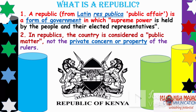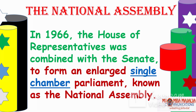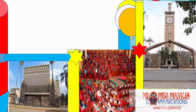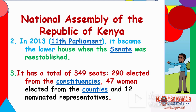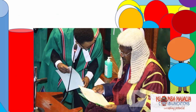In 1966, the House of Representatives was combined with the Senate to form a unicameral National Assembly, which served as such until 2013. In 2013, with the 11th Parliament, it became the lower house when the Senate was re-established under the 2010 Constitution. The National Assembly now has 349 seats. The Speaker is an ex-officio member — not a member of Parliament per se, but one who presides over sessions.